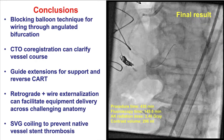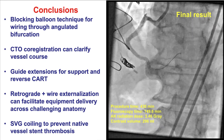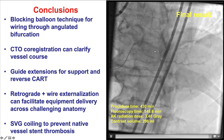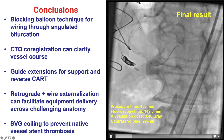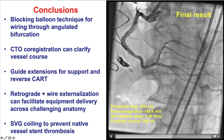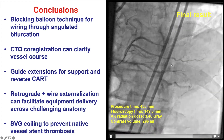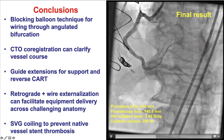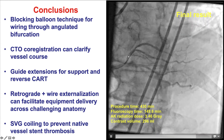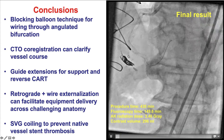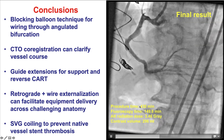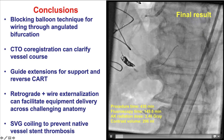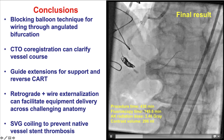We achieved a nice final result in the native right coronary artery, with TIMI flow into the right coronary posterior lateral and PDA. An excellent result was achieved despite the excessive tortuosity and calcification. This was not an easy case — it took an entire day — but we were very happy it was eventually successful.